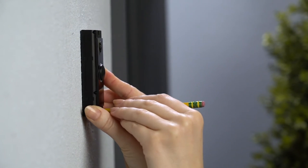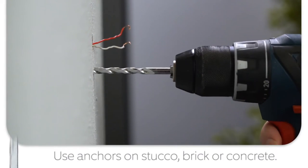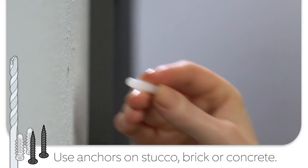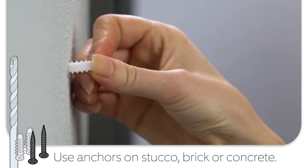If you're installing on stucco, brick, or concrete, use a ¼-inch masonry bit to drill holes in your wall, then insert the included wall anchors.